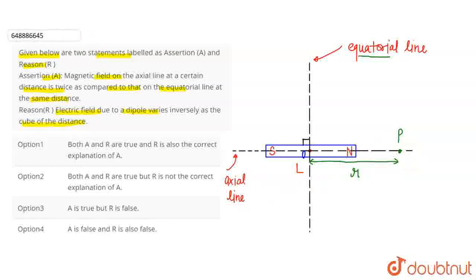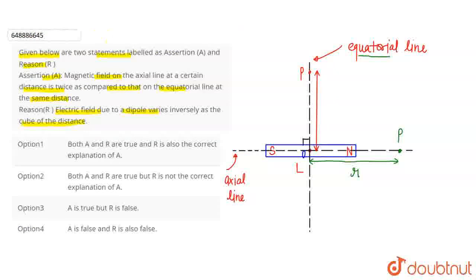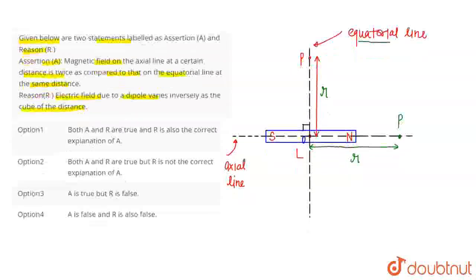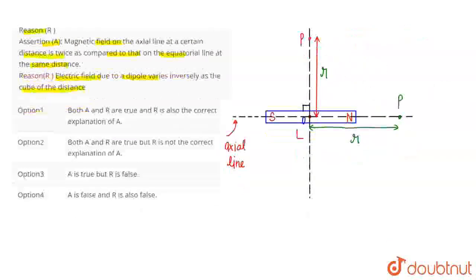Now, at the same distance, I take another point on the equatorial line. The same point P is on the equatorial line, and its distance from the center is also r — the same distance r, measured from the magnet's center. So we need to show that the magnetic field at point P on the axis is two times that on the equatorial line.